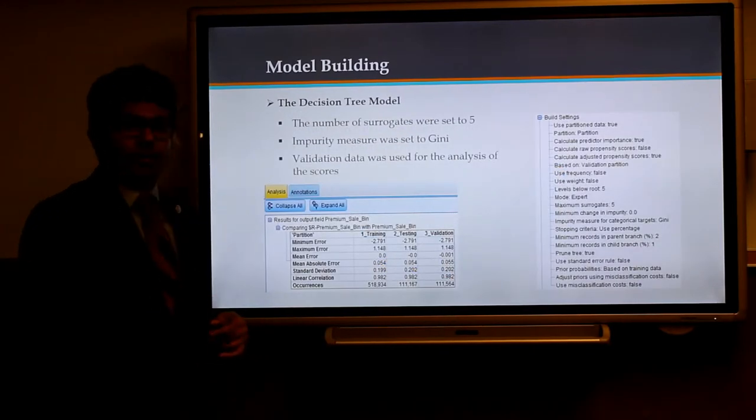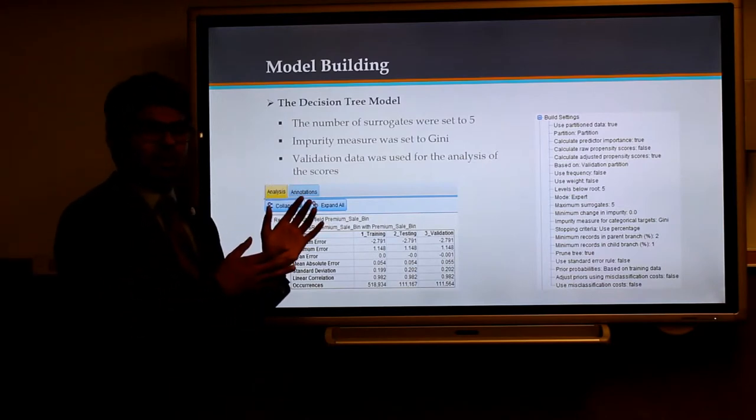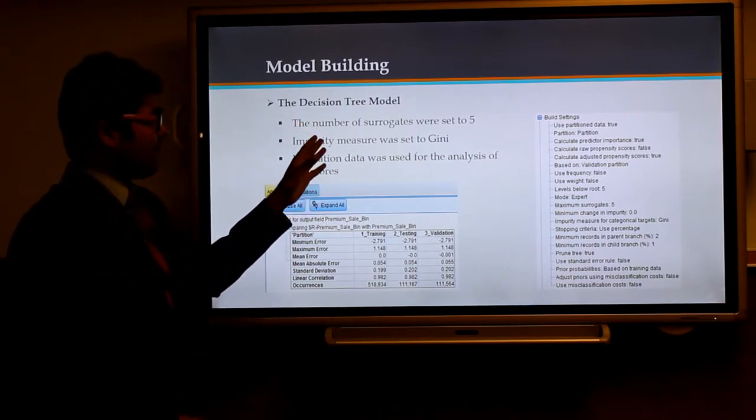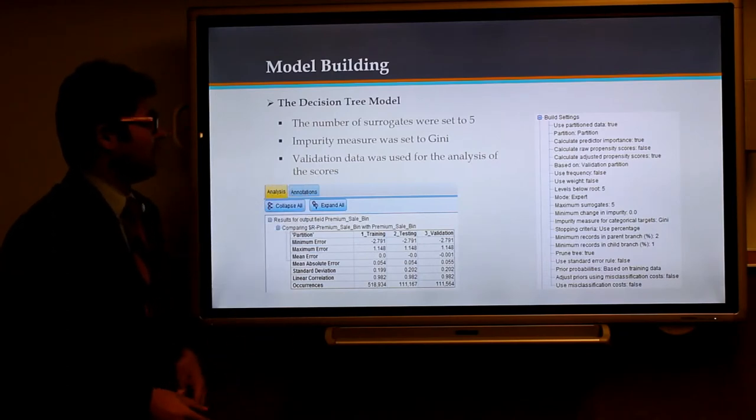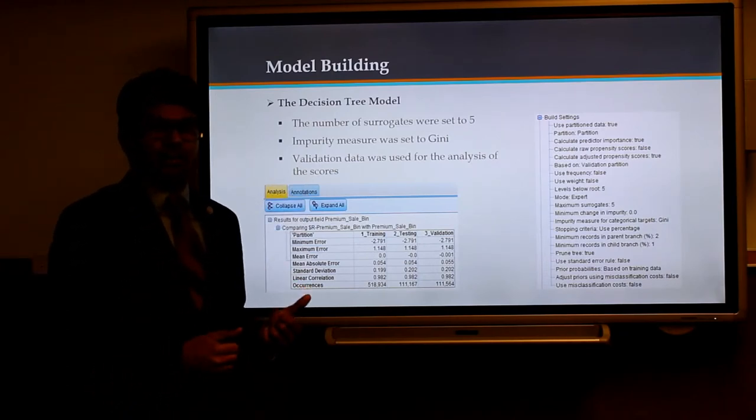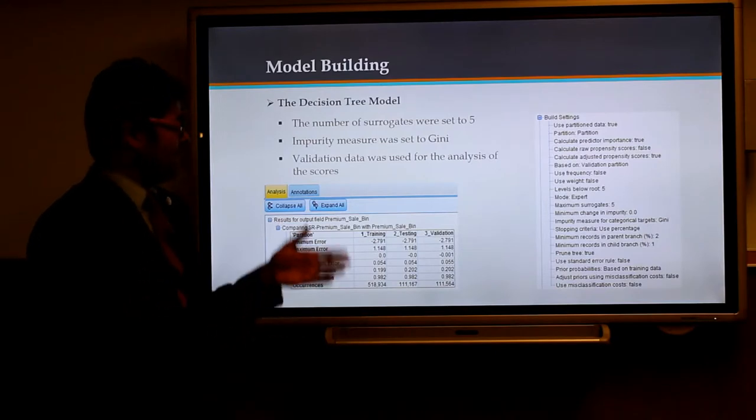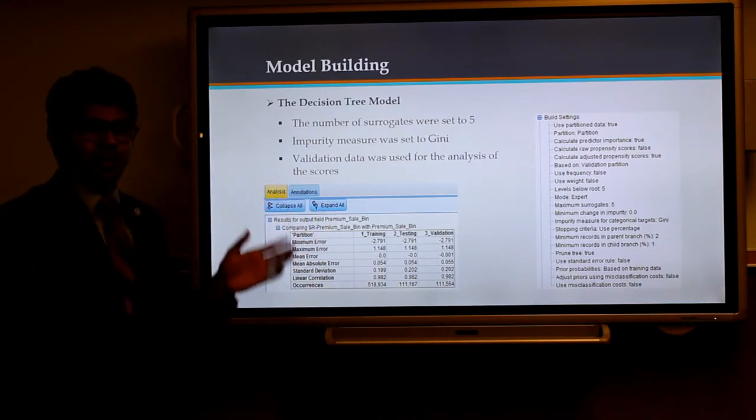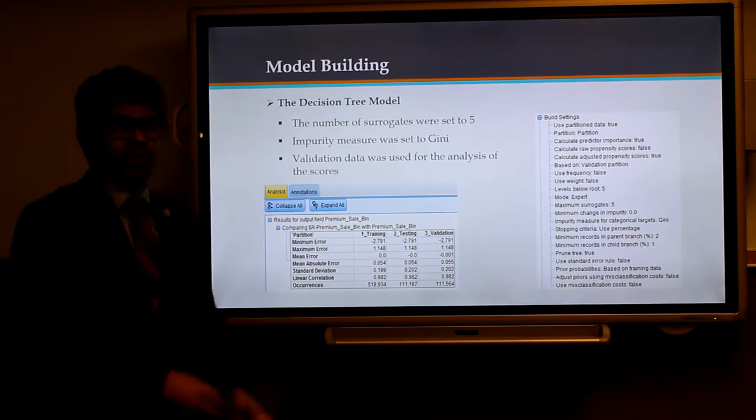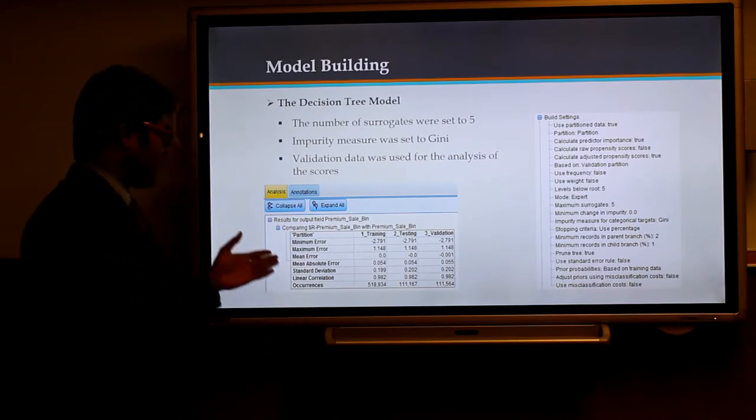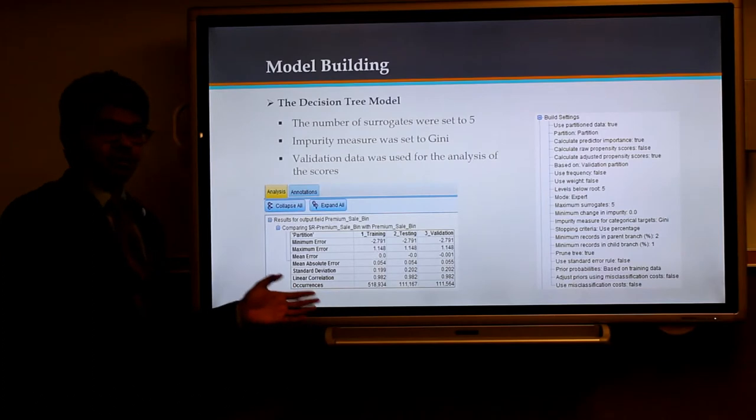This is the first model, the decision tree model. In this, we selected the surrogate levels to be 5. We didn't dig into much deeper data because the number of records were high enough and we just wanted to see the most important factors. Next, we selected the impurity measure to be GINI. GINI gives us an estimate of how much the number of variables selected are going to be wrongly interpreted. The entropy method was not selected because the input variable had more values that were not distinct enough. The validation data was used for analysis of the results. We could see that the standard deviation is 0.2 in the training, testing and validation data, which gives good data for us.